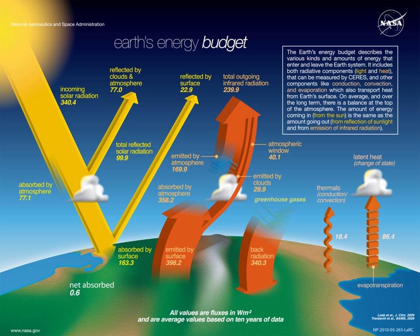Other minor sources of energy are usually ignored in these calculations, including accretion of interplanetary dust and solar wind, light from stars other than the Sun, and thermal radiation from space. Earlier, Joseph Fourier had claimed that deep space radiation was significant in a paper often cited as the first on the greenhouse effect.